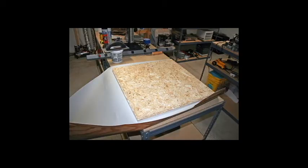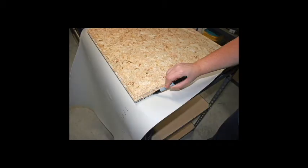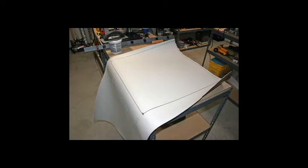So we lay out the vinyl, and then we put the wafer board on top of it. We mark the dimensions of the wafer board onto the vinyl. Then we simply cut that out.